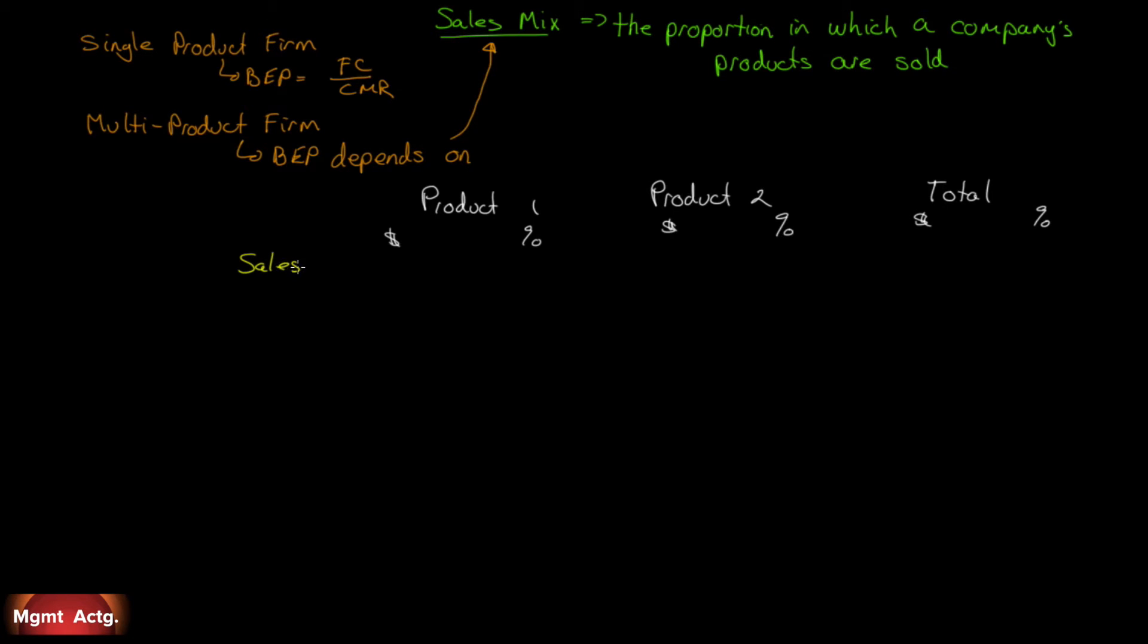Product one sold 20,000, we'll call that 100%. Product two sold 80,000, call that 100%, which means we sold $100,000 in total. Less is our variable costs. Our variable costs for product one were 15,000, that is 75% variable expense ratio. Our variable costs for product two were 40,000, which only gives us a 50% variable expense ratio. 15 plus 40 is 55,000 in total for the organization. So the organization as a whole has a 55% variable expense ratio.